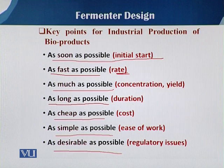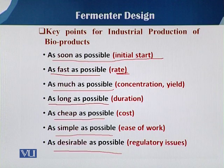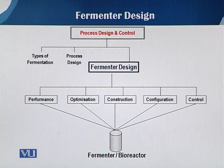The regulatory issues are very simple and easy to control. So keep in mind: the initial start, rate of production, concentration and yield, duration, cost of production, ease of work during production, and the regulatory issues — these are why the fermentation process is preferred over other chemical and ordinary processes for producing any product.